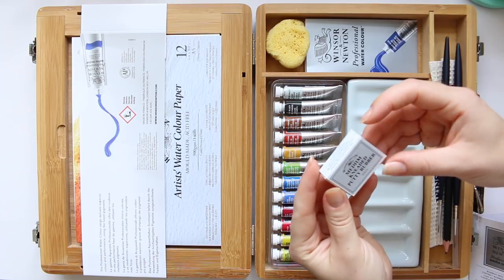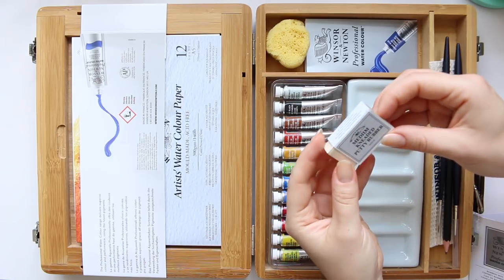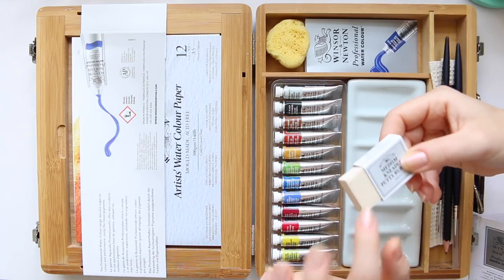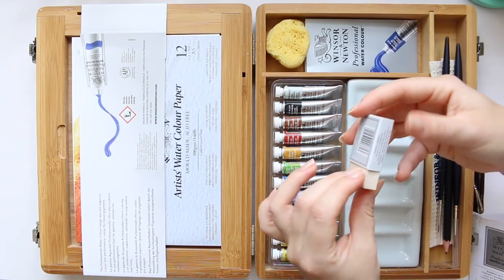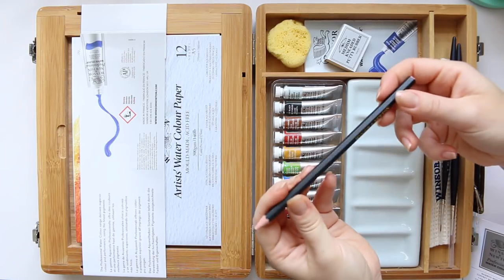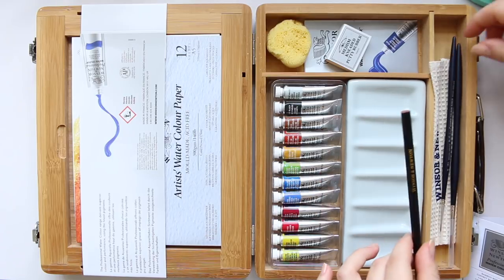And then the medium kneaded putty rubber, it's got a film on there which you can remove. Then there is a Winsor Newton pencil, it doesn't say what the graphite is so I don't know.